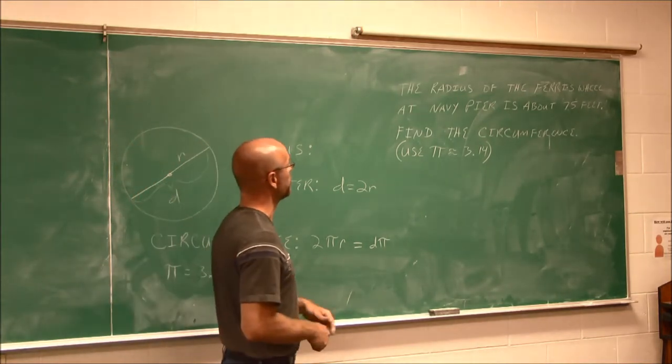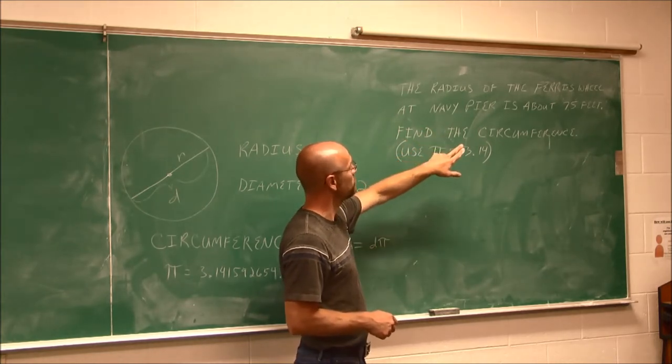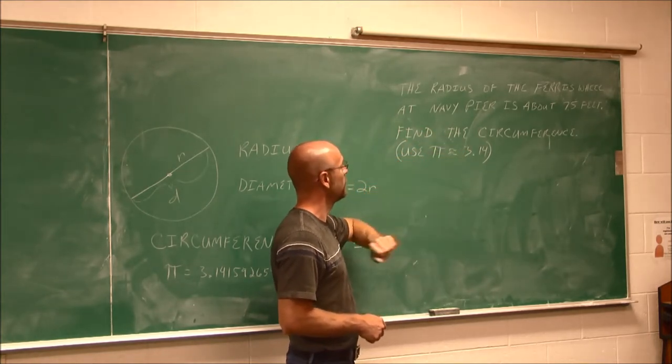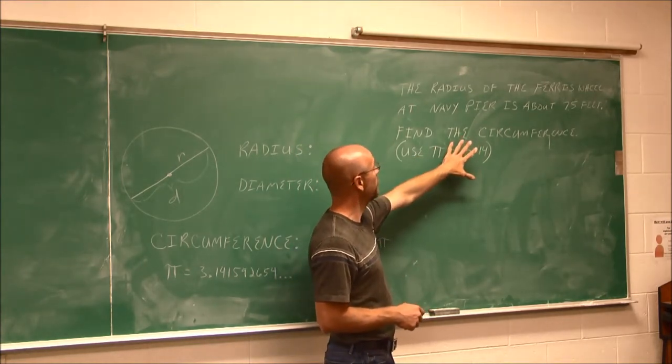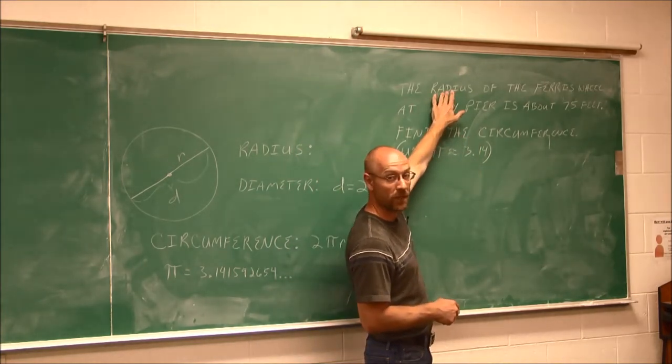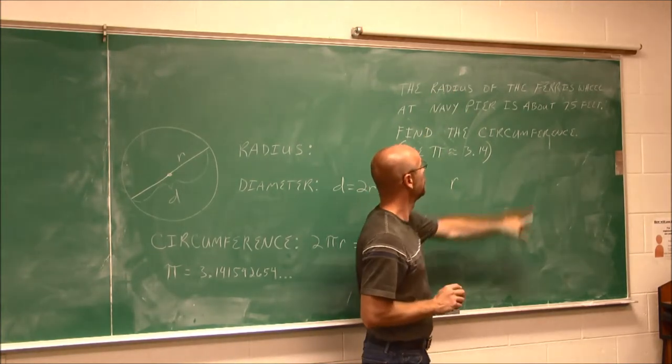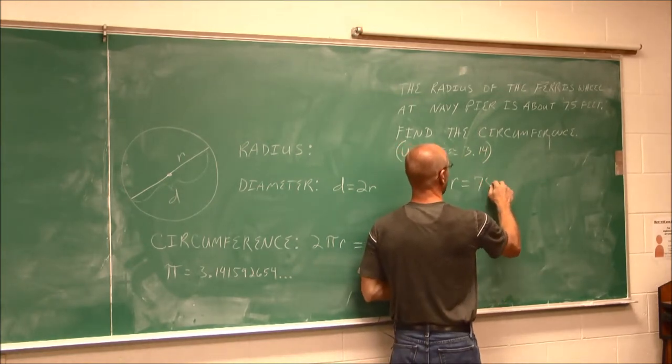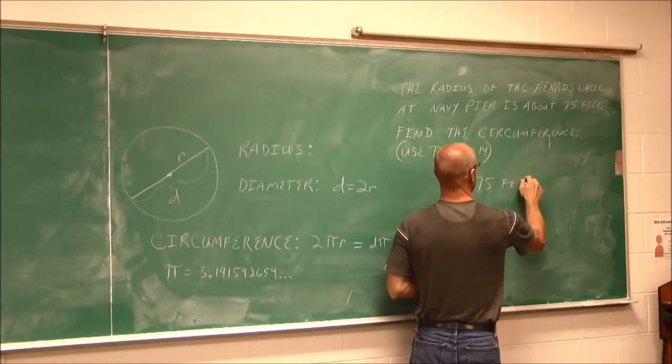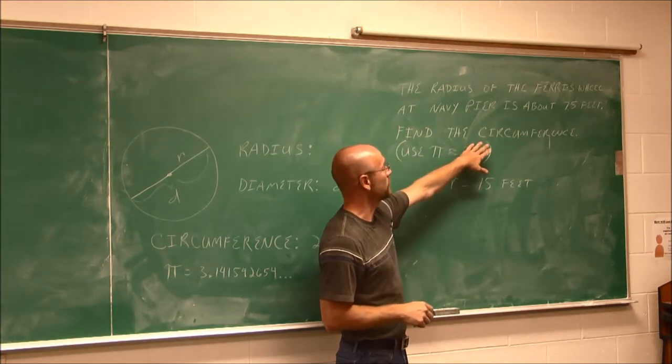So let's take a look at an example here. It says the radius of the Ferris wheel at Navy Pier is about 75 feet. Find the circumference. Well, if we read it again, we're told something about the radius. So I'm going to write down R, and we're told that that's 75 feet. So the radius is 75 feet.